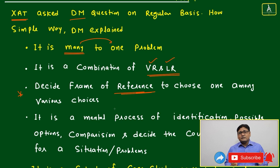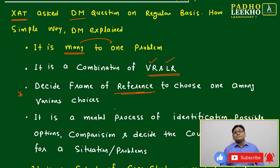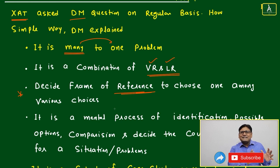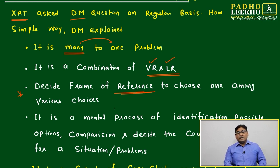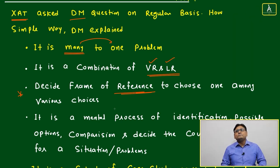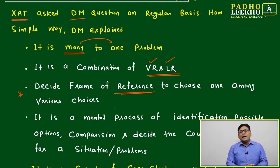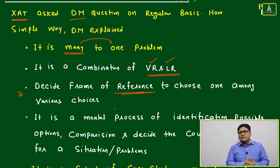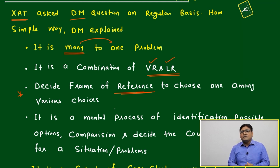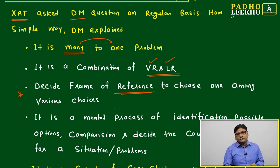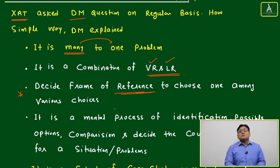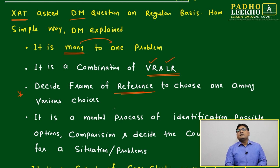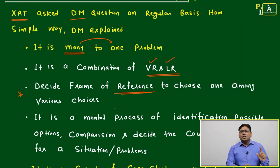Her own company would be built on a core ethic: male and female should be balanced in every aspect, starting with the numbers — 50 percent male, 50 percent female, with no differentiation on any ground. She did it, opened the company, hired equally, and slowly the company grew and expanded to four or five cities in India and eventually went international with branches in other countries.